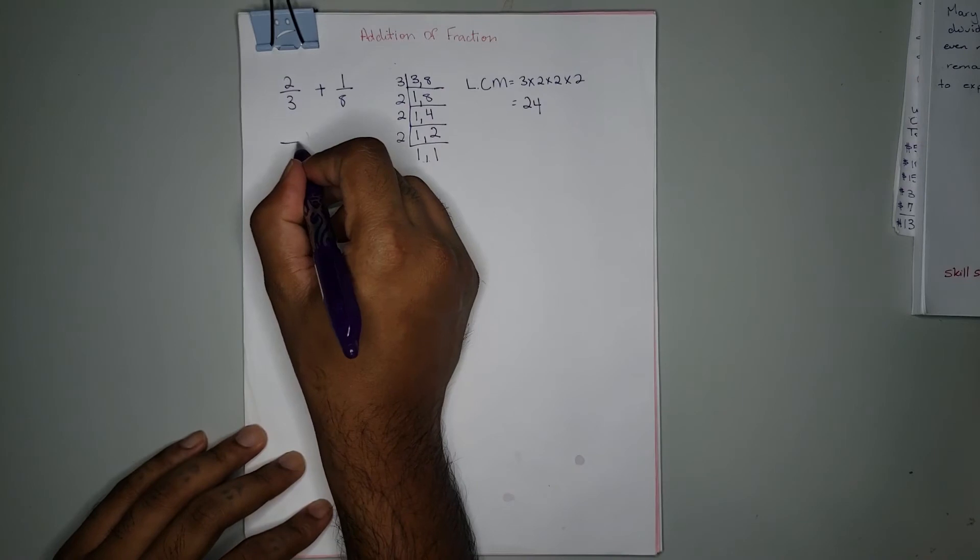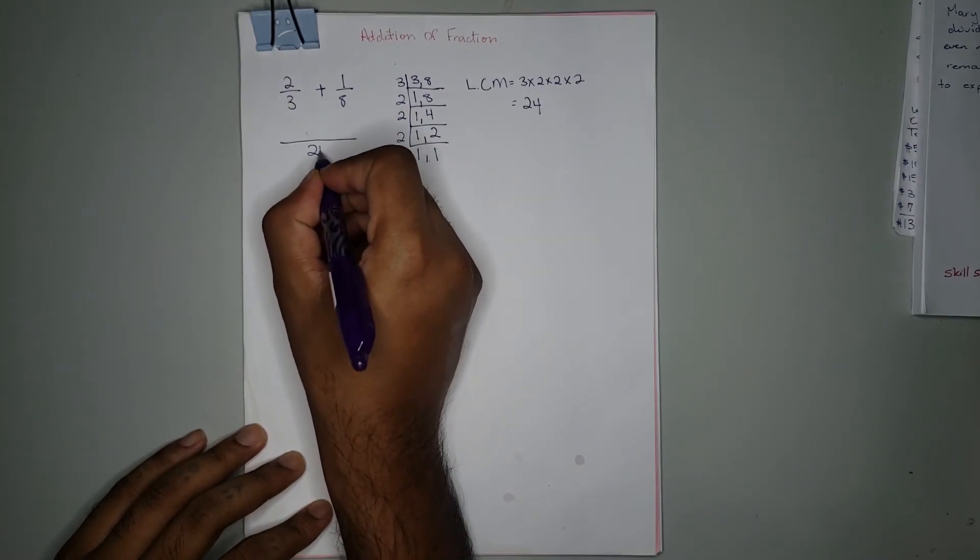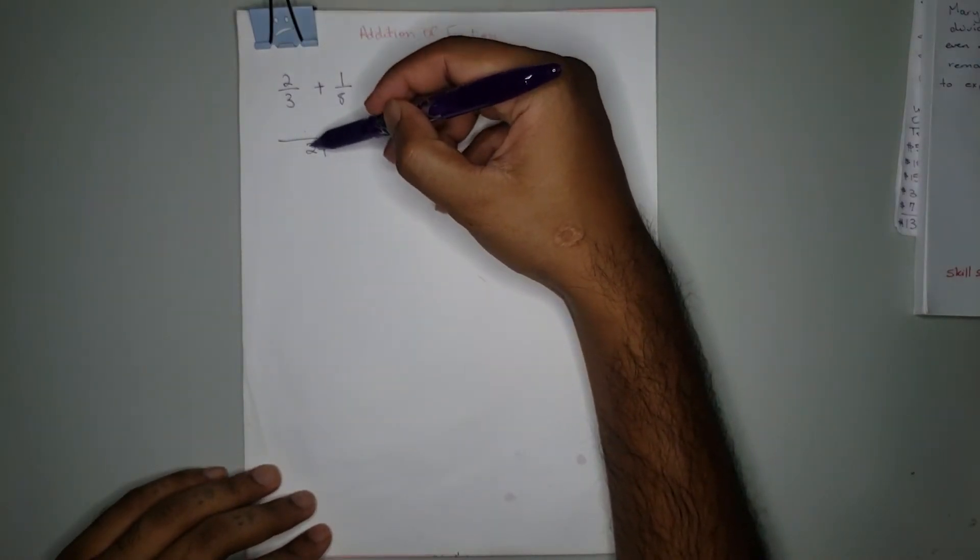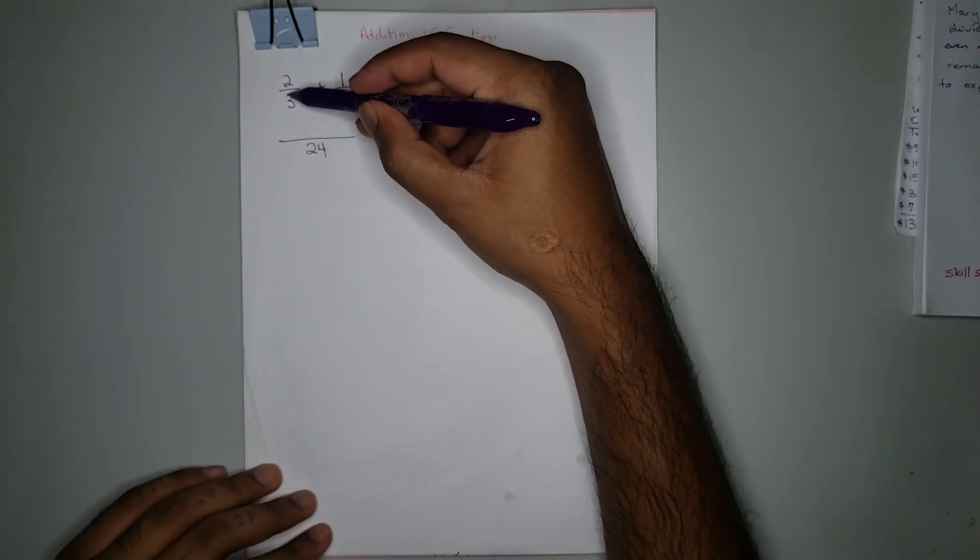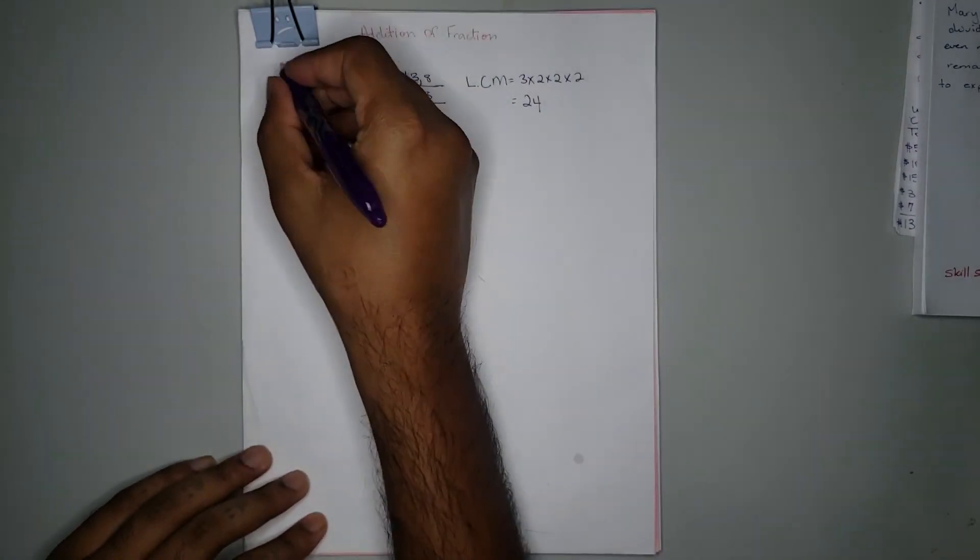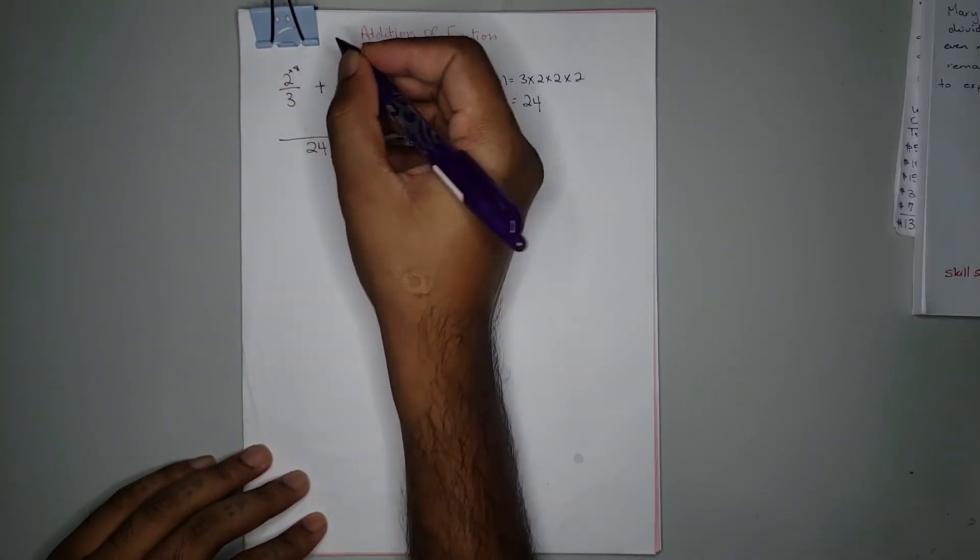What we do now is divide 24 by the denominator of each fraction. So 24 ÷ 3 = 8, and 2 × 8 = 16. Then again, 24 ÷ 8 = 3, and 1 × 3 = 3.